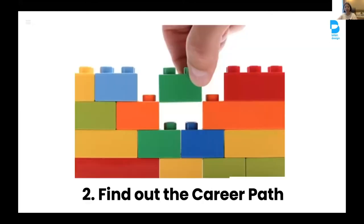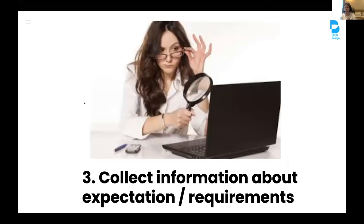The second thing is to find out about the career path. Each organization has a different culture, structure, hierarchy, and levels. Discover what kind of career path is available in your organization and whether you have a promising future there. Number three: collect information about expectations and requirements. Organizations usually have a set of requirements for lead positions — list them down. Understand what responsibility, skills, deliverables, and targets are assigned to the lead position.